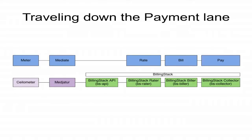We have, like, the journey down the payment lane: from pulling some data from Ceilometer, wanting to mediate it towards a billing system, wanting to apply some prices on the data pulled from Ceilometer, then taking this rated data and turning it into an invoice. And finally, you want to charge your customers for this, either using some in-house system like SAP, or an online payment gateway like Braintree or Spreedly.